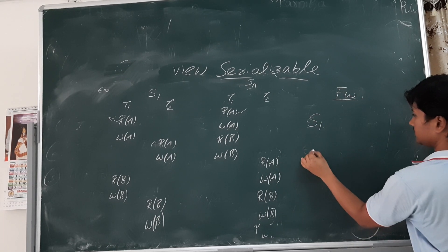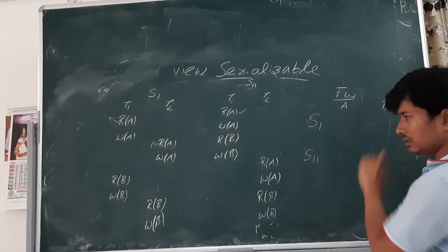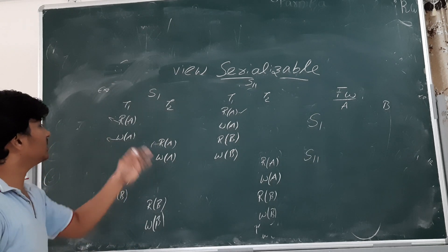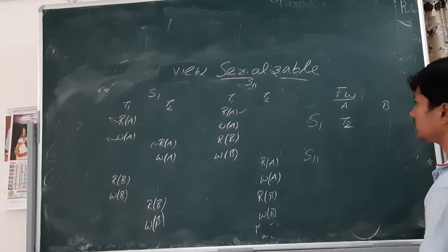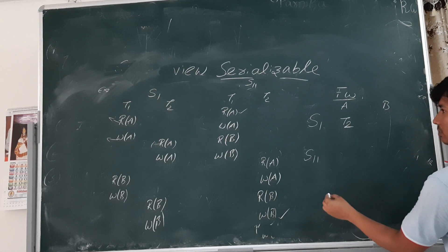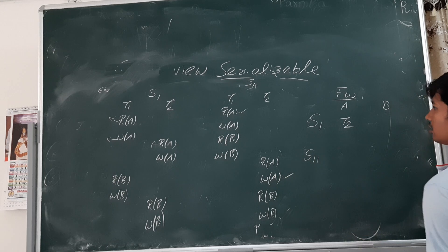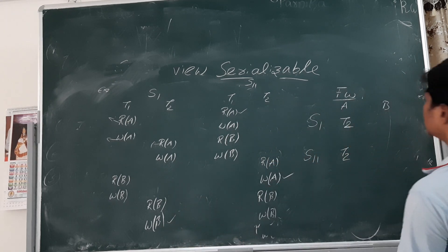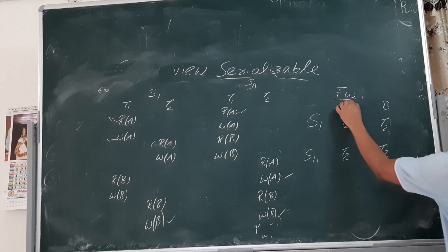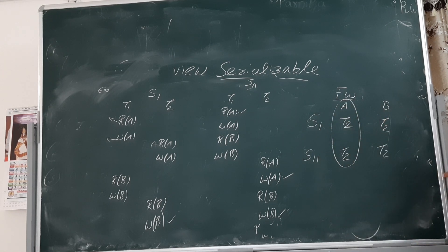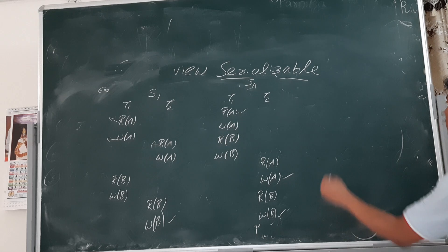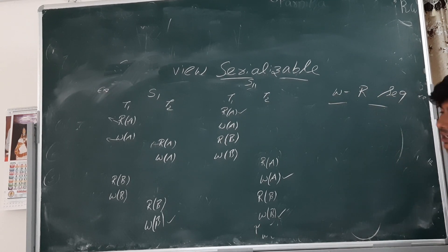Now we check the second condition: the final write. For data item A, there are two write operations — one in T1 and another in T2. The final write is done by T2. In S11 also, the final write on A is done by T2. For data item B, the final write is also done by T2 in both schedules. So the final write condition is satisfied for all data items.